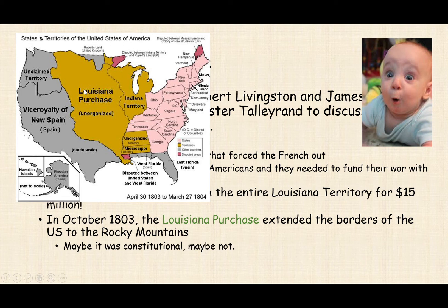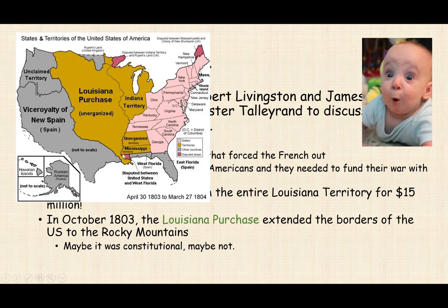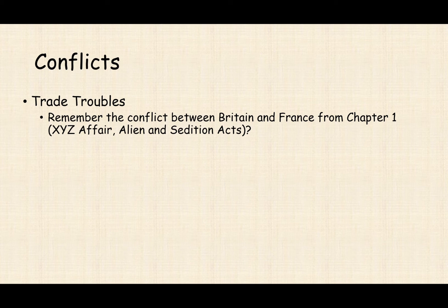Jefferson sends Lewis and Clark to explore this new territory — cataloging plants, animals, and the people living there. They produce amazing drawings and journals that are later published. Sacagawea helps lead the way. Beyond exploration, the territory offers enormous economic potential: land sales for revenue, and resources like minerals and farmland.